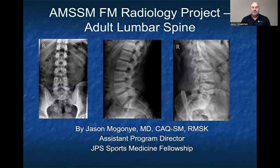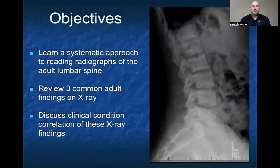Hi, my name is Jason Magone, and I'm from the JPS Sports Medicine Fellowship in Fort Worth, Texas. This talk is part of the Family Medicine Radiology Educational Series, and today I'll be talking about the adult lumbar spine. I have no financial disclosures regarding this topic. Our objectives today are to learn a systematic approach to reading radiographs of the adult lumbar spine, review three common adult findings on x-ray, and discuss the clinical conditions and correlations that those x-ray findings may mean.